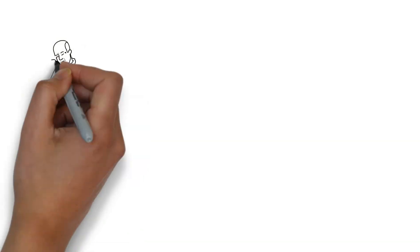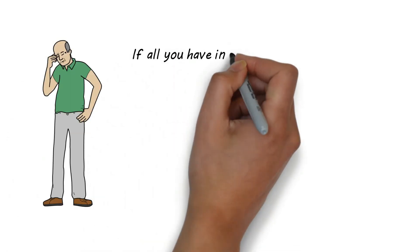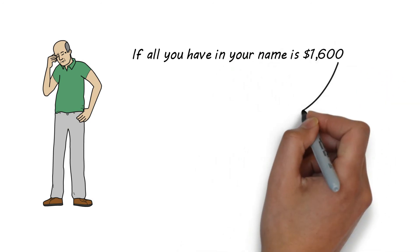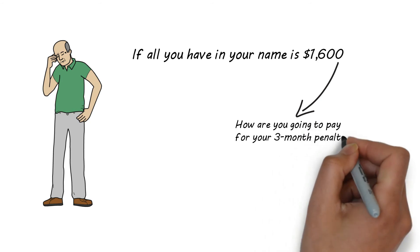Now, in order to be financially eligible and apply for Medicaid, you as the applicant can only have $1,600 in your name. So if you only have $1,600 in your name when your application is granted, how are you going to pay three months of care in a nursing home?